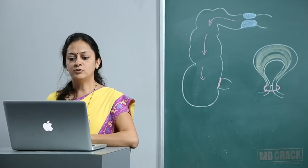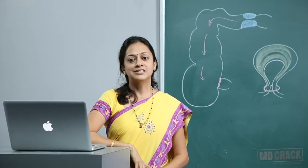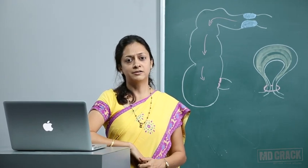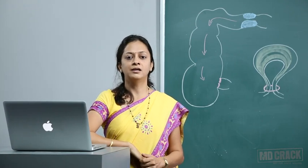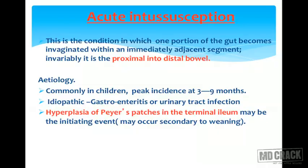Acute intussusception is a very important topic as it is maximally asked in all competitive exams — clinically, in emergency, and in exam. Acute intussusception is the condition in which one portion of the gut becomes invaginated within the immediately adjacent segment. Invariably, it is the proximal segment into the distal bowel.